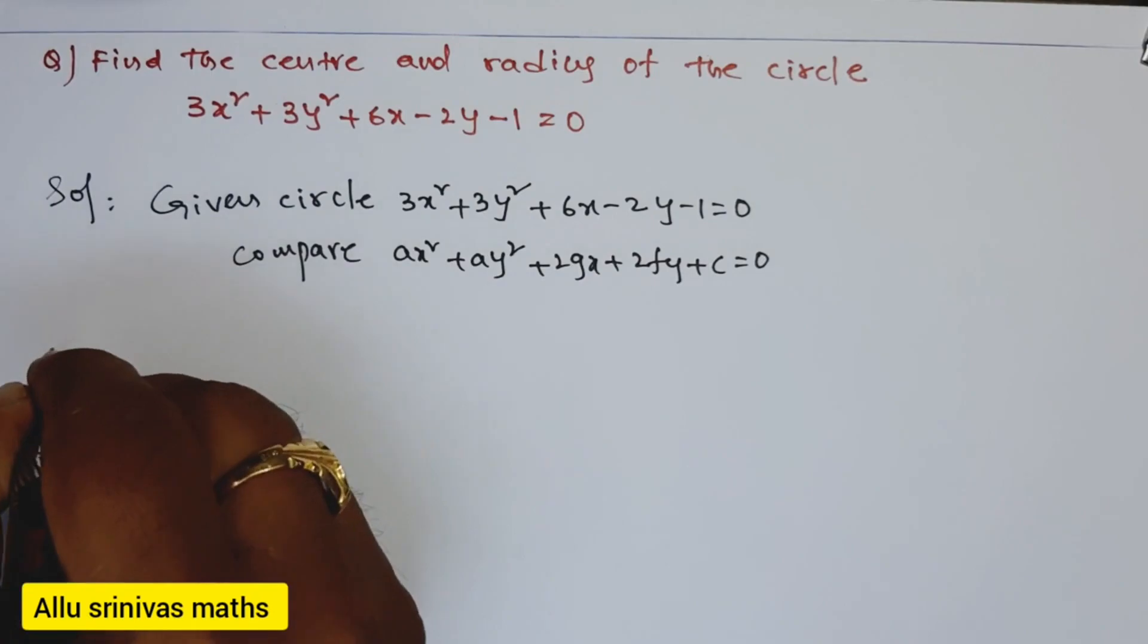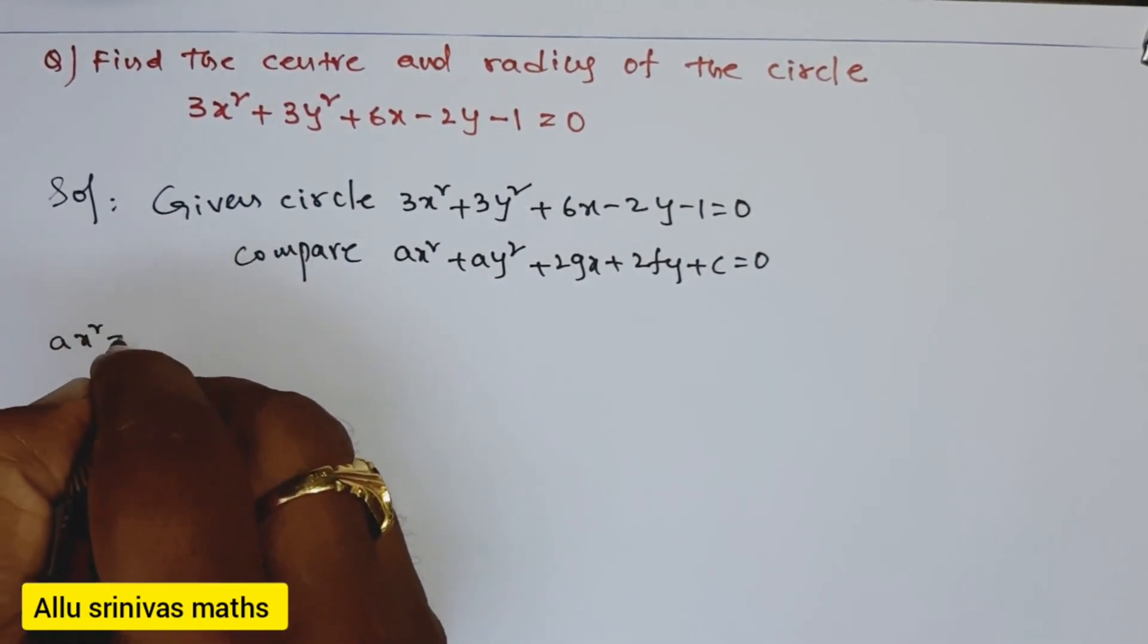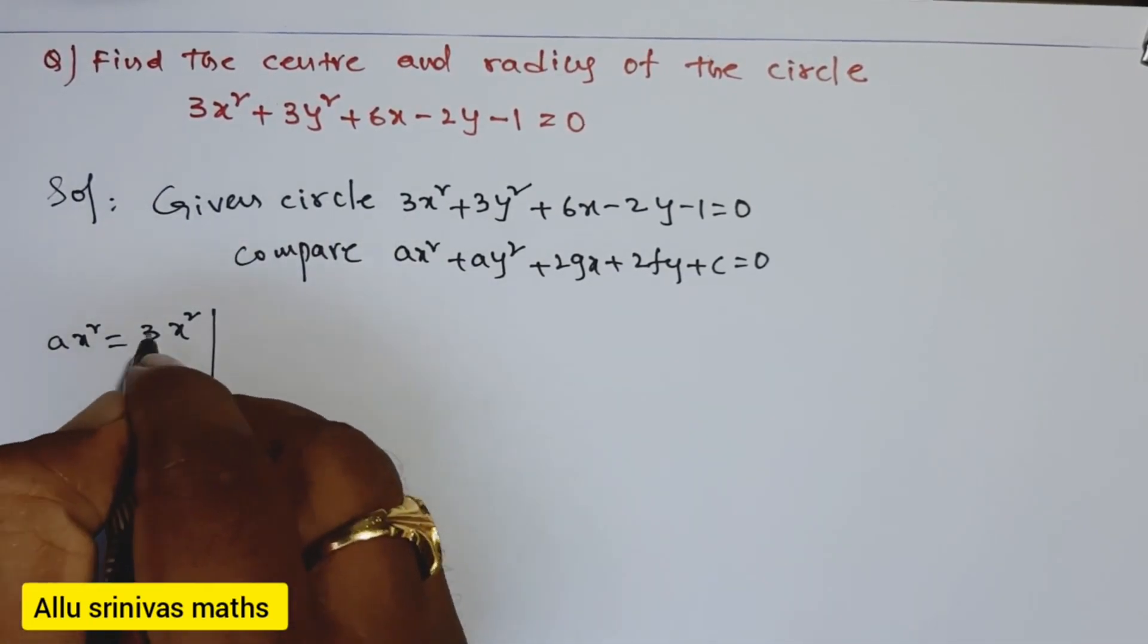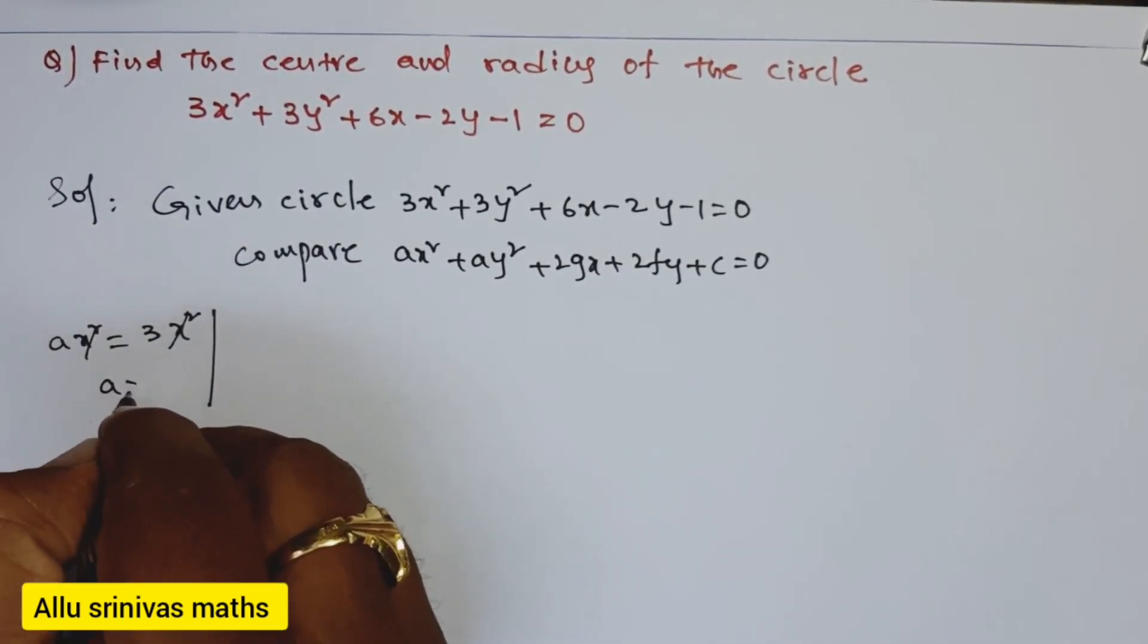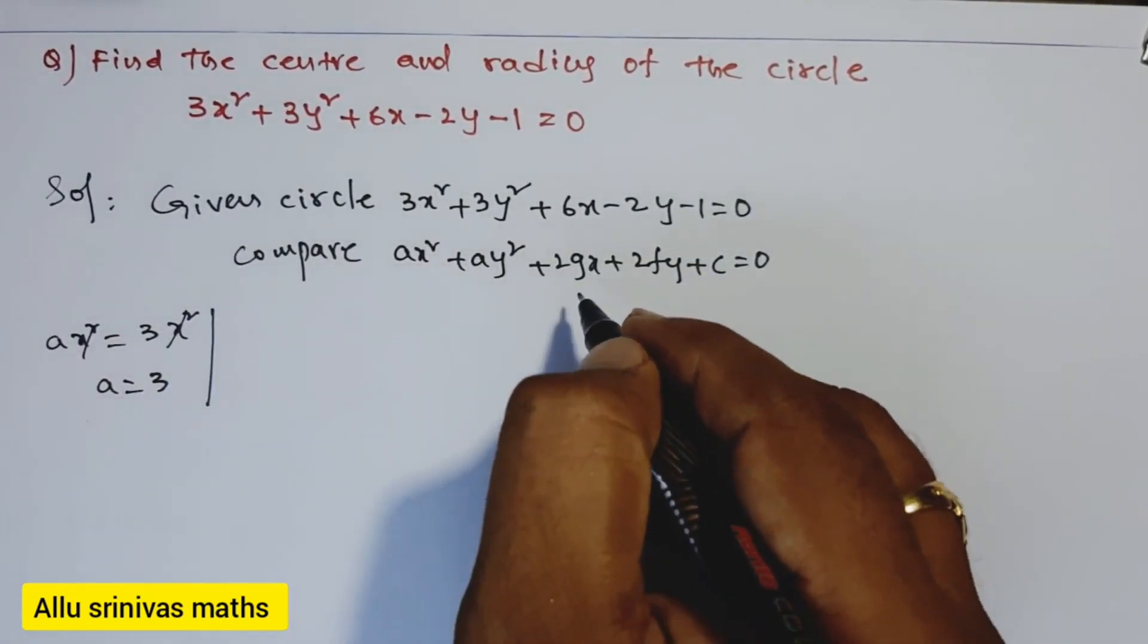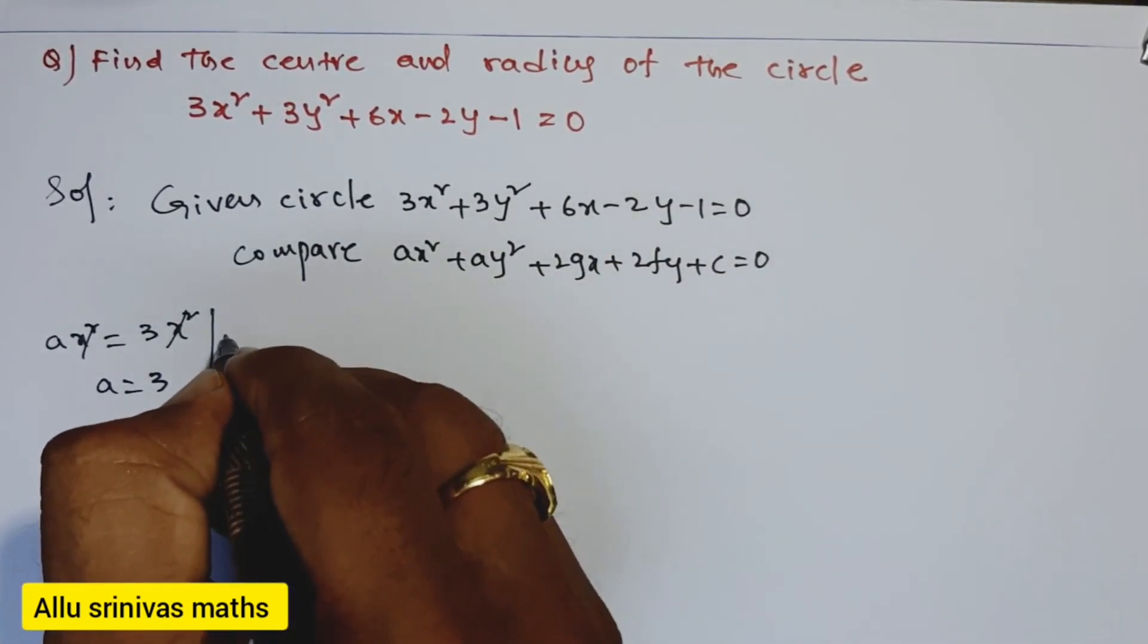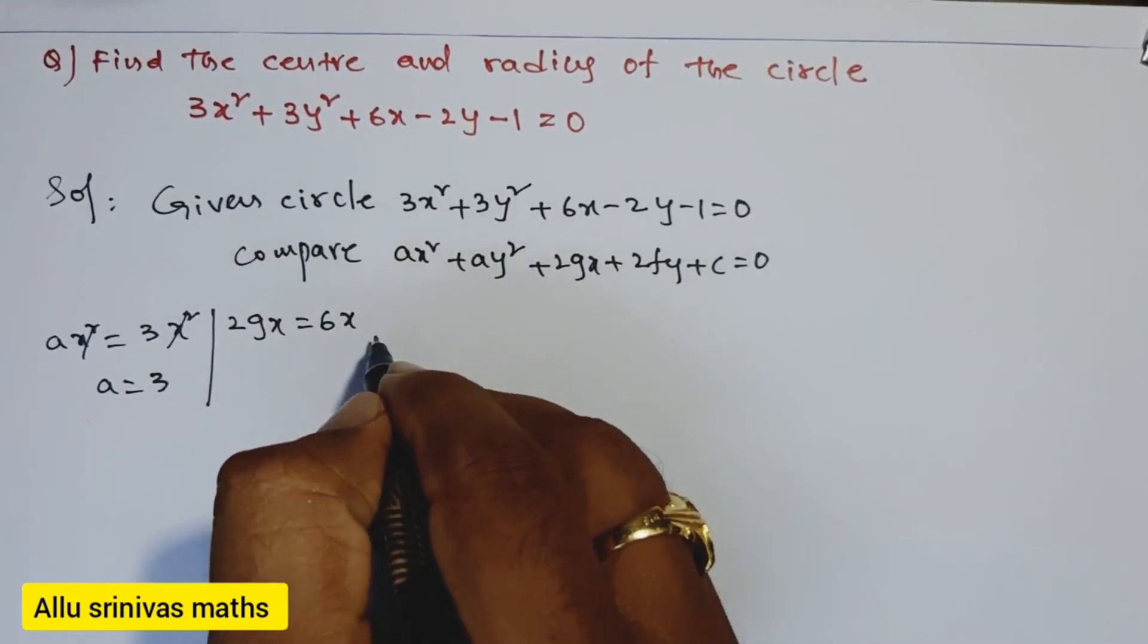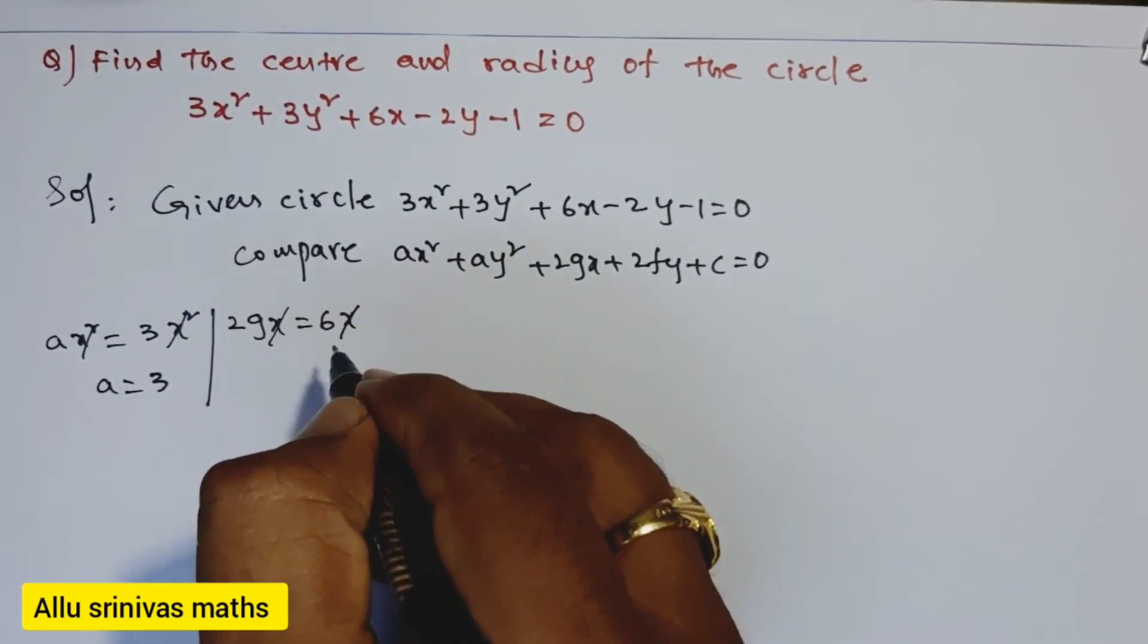ax² = 3x². Both sides, x² cancels, and then a = 3. Next, we compare the x terms in both circles: 2gx = 6x. Both sides, x cancels, so 2g = 6 and g = 3.